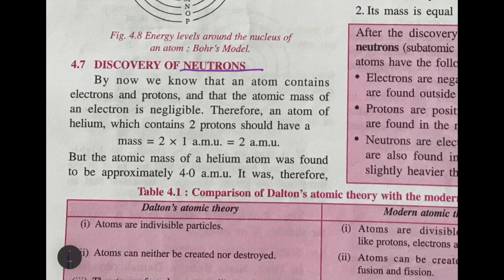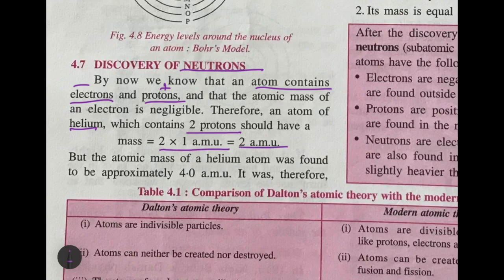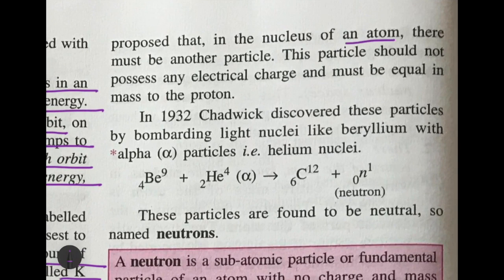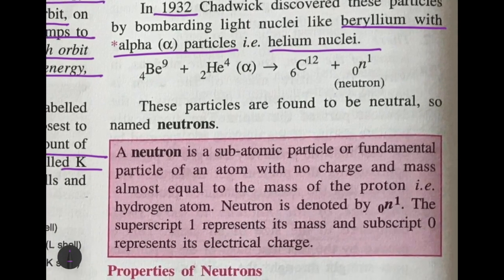Then came the discovery of neutrons. An atom of helium, which has two protons, should have a mass of 2 amu, but the atomic mass of helium was found to be 4 amu. It was therefore proposed that the nucleus must contain another particle with no electrical charge and mass equal to that of the proton. In 1932, Chadwick discovered these particles by bombarding light nuclei like beryllium with alpha particles.